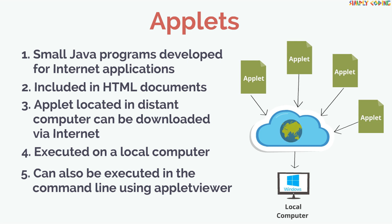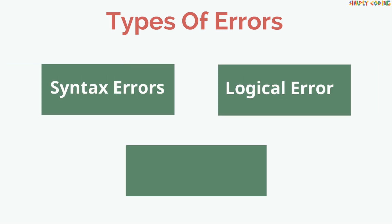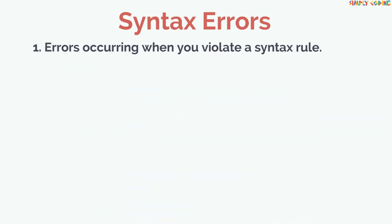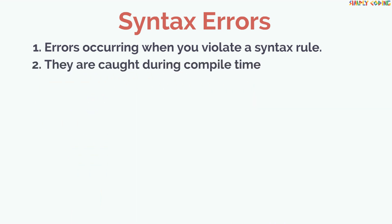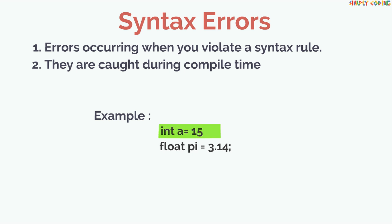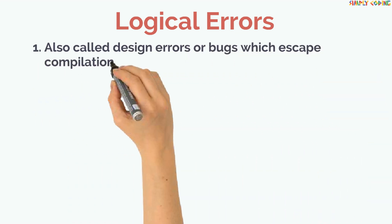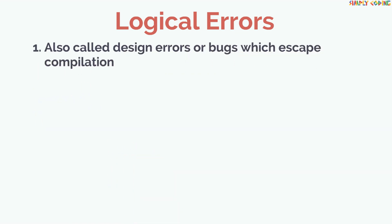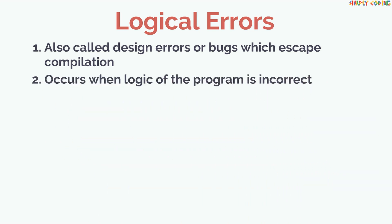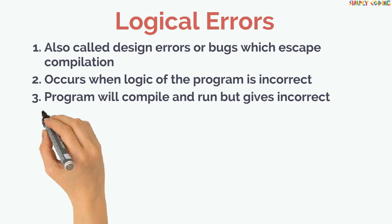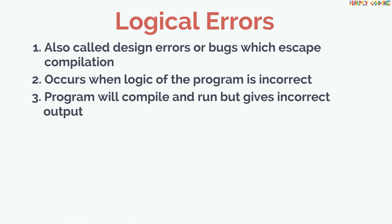When we write Java programs, we could encounter three types of errors: syntax errors, logical errors, and runtime errors. Syntax errors are errors occurring when you violate a syntax rule; they are caught during compile time. Then there are logical errors, also called design errors or bugs, which escape compilation. They occur when the logic of the program is incorrect, so your program compiles and runs but gives incorrect output. It can be fixed by testing and debugging the program.